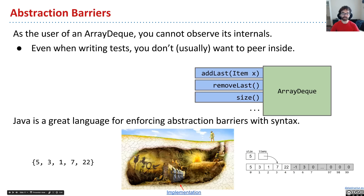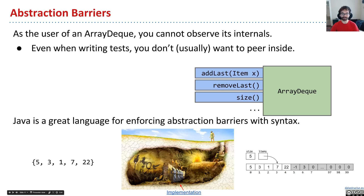Consider the example of the cave dwellers. As far as they're concerned, the list contains 5, 3, 1, 7, and 22. The monks manipulating shadows using devices and fire know that the secret is there's actually an array of length 100, a size variable, all that stuff — but the user has no idea. When you write tests, you should be thinking like a user: what can I do to interact with these shadows to see if they have a self-consistent logic? You're not supposed to climb over the wall and start asking the monks questions. The private keyword makes this wall absolute, and I think that's a lovely thing about Java.